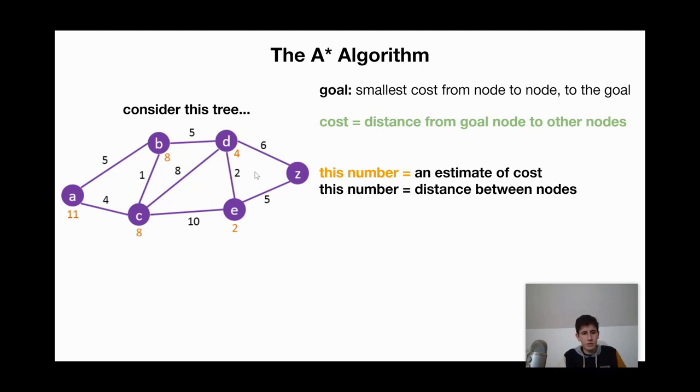So the smallest cost from node to node, let's remember that. And cost is the distance from goal node to other nodes. Well, the orange number in this tree is an estimated number of cost, an estimated value for cost. And the black number is the distance between two points.